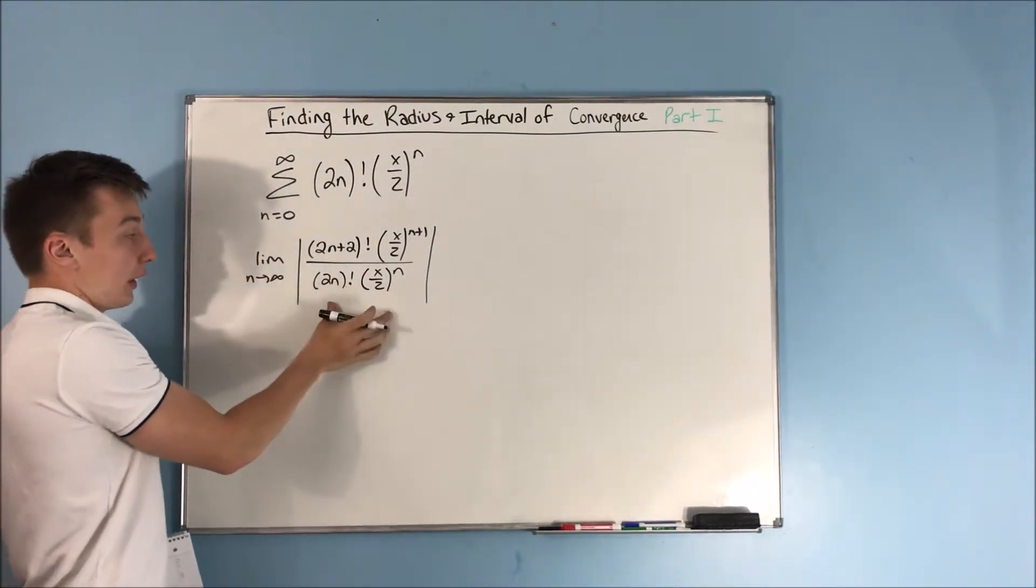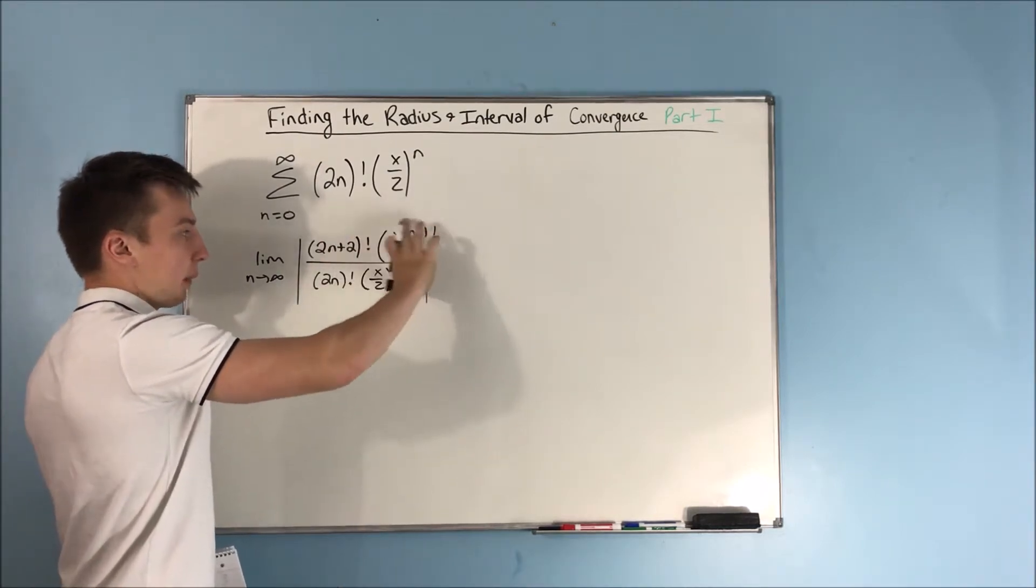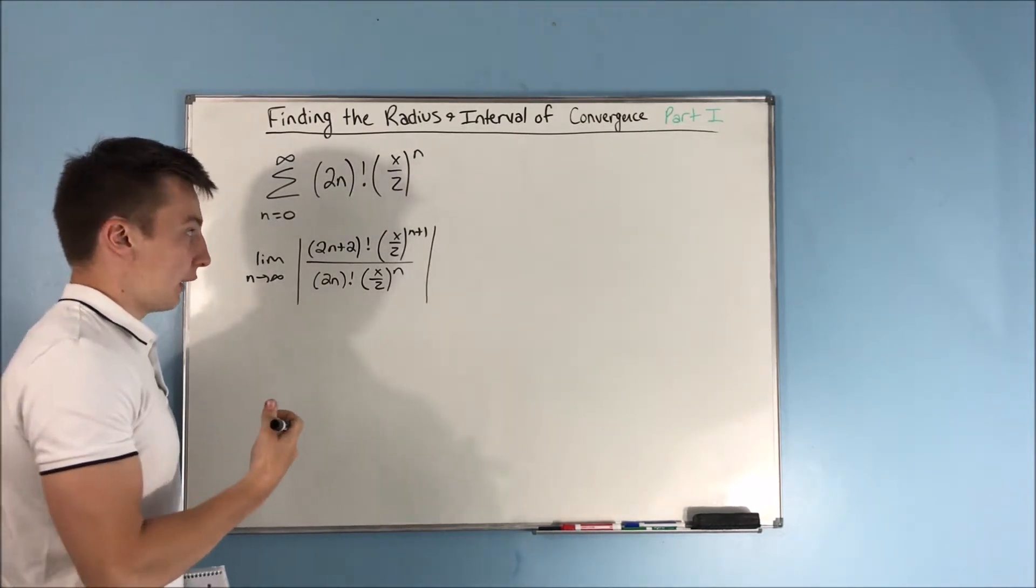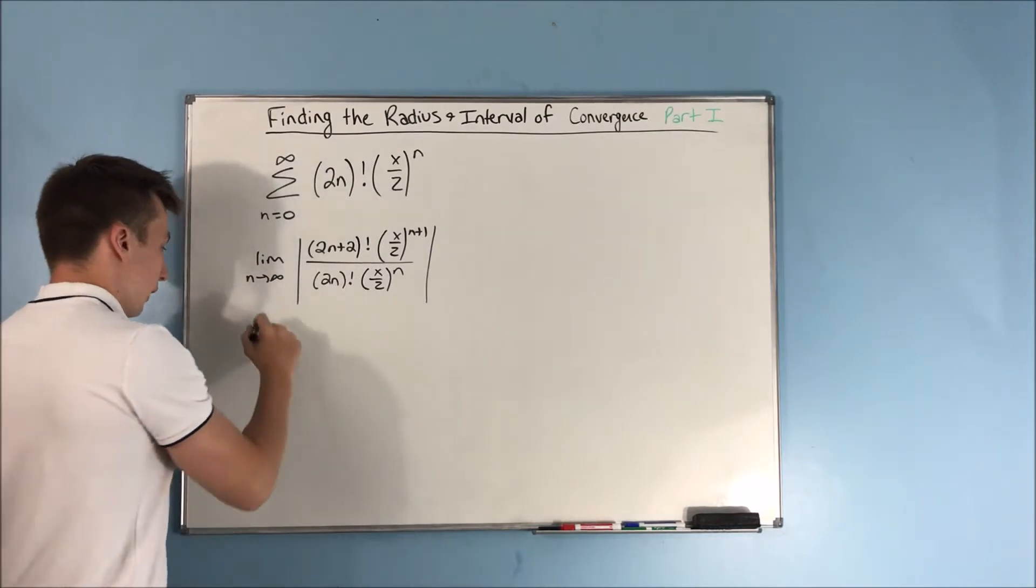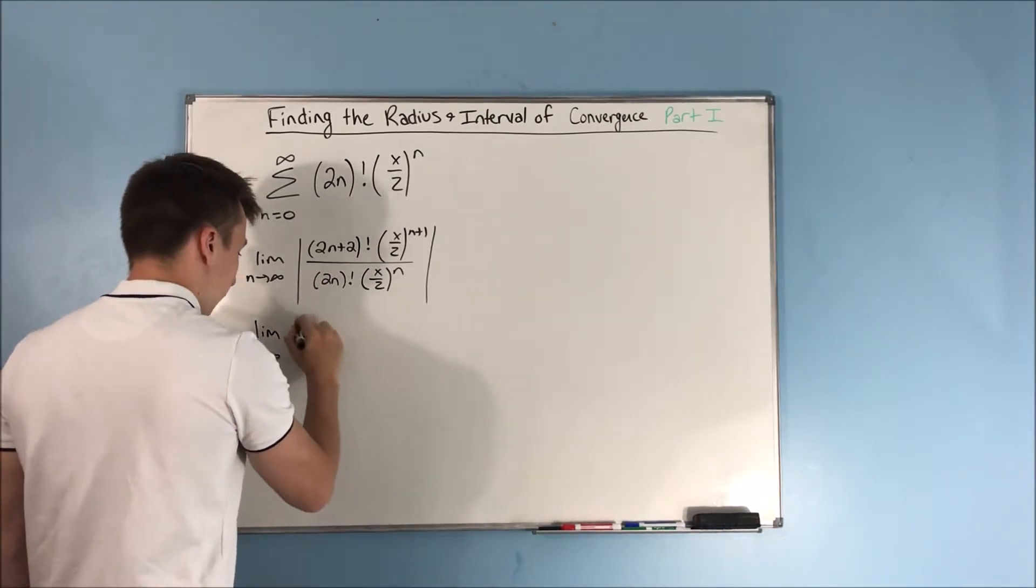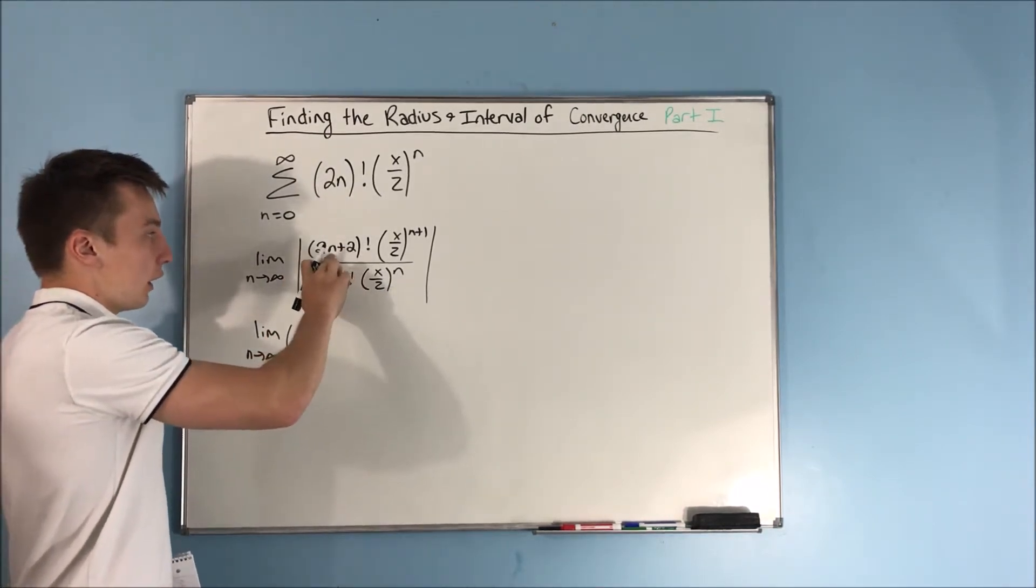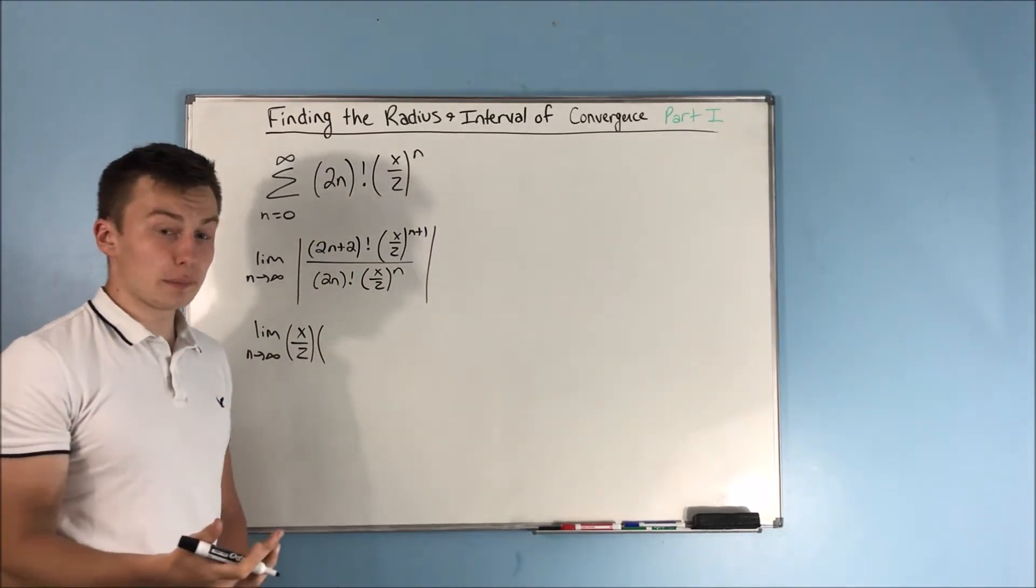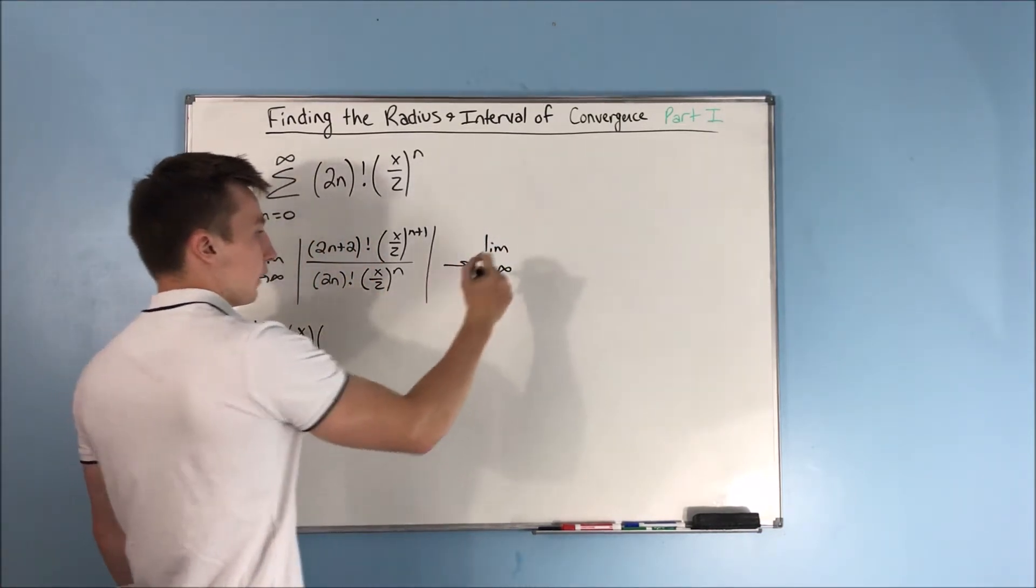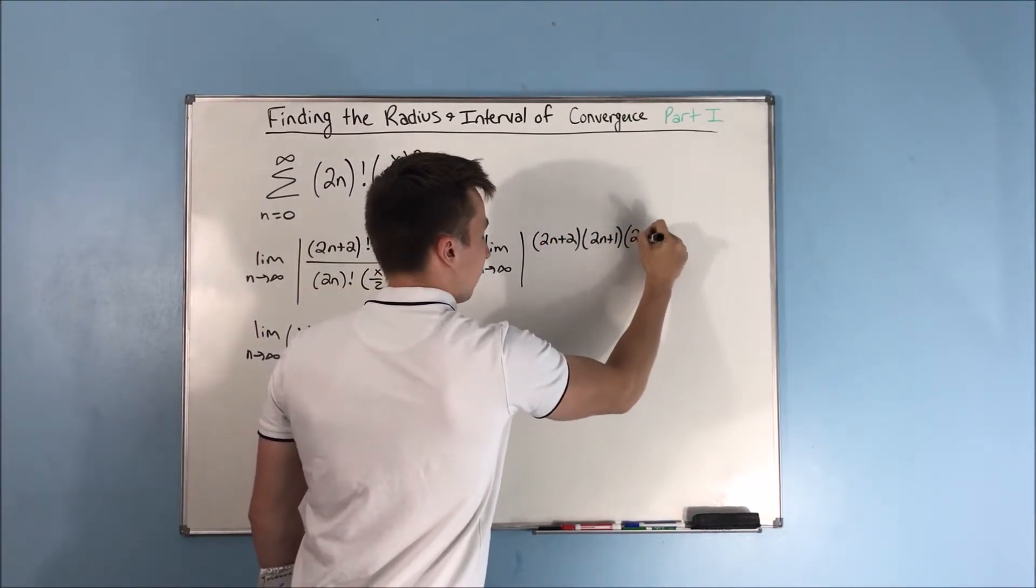So we kind of already have these separated, to be honest, it actually looks pretty nice already. So first off, let's deal with this. You have x over 2 to the n plus 1 over x over 2 to the n, and that's just going to give you an x over 2. So we can write this as the limit as n approaches infinity. We know that we have an x over 2 here. And that's going to be multiplied by a 2n plus 2 factorial over 2n factorial. Now we can rewrite this 2n plus 2 factorial as the same thing as 2n plus 2 times 2n plus 1 times 2n factorial.